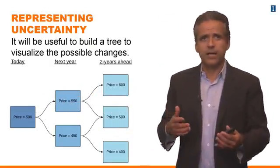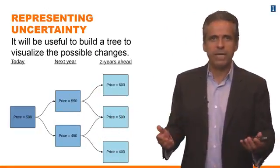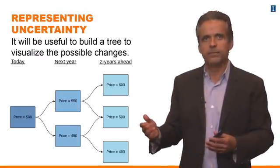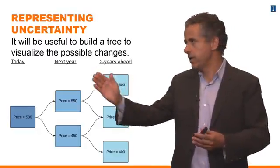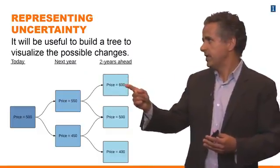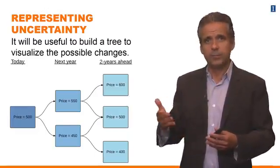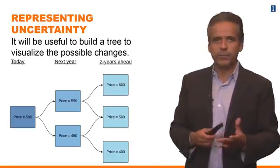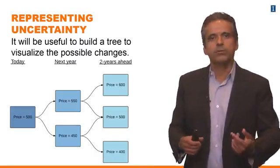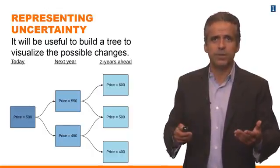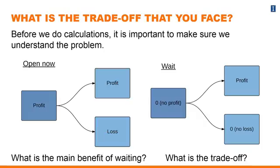The decision tree is based on the price of gold. Gold starts today at $500 an ounce, and we expect the price could move up or down with equal probability. We're thinking of a two-year horizon: the mine stays open for three years, but since we extract gold at the beginning of each year, the price two years ahead determines the profit in year three. The price could go up to $600 or down to $400, and profitability depends directly on that price.